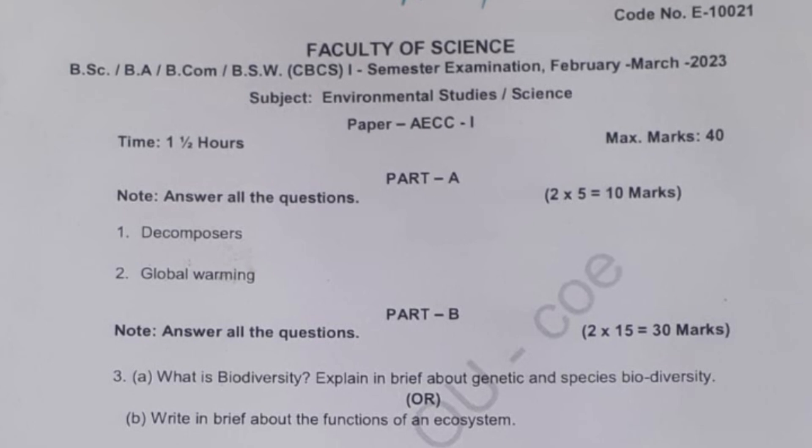The time duration is one and a half hours and the maximum marks is 40. In Part A, both the first question and second question will be asked — the first question is from the first unit and the second question is from the second unit. You need to attempt both questions; each carries five marks. For five marks, you need to write at least one and a half sides to score good marks.